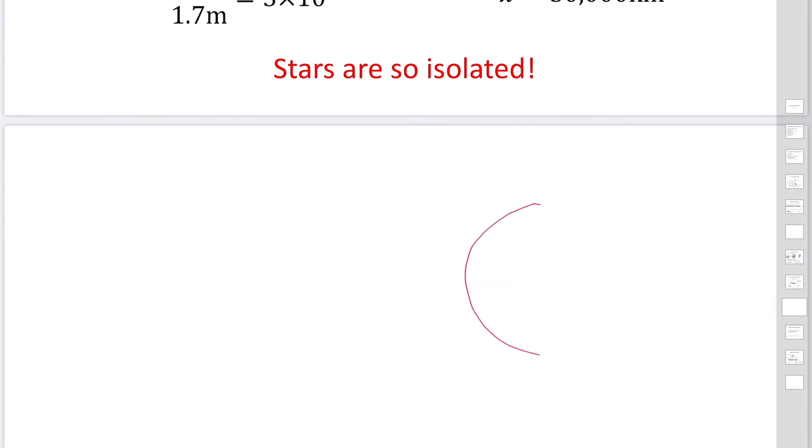If you live here, the longest distance you could consider is 20,000 kilometers, longer than this length. So stars are so isolated. When you consider the evolution of stars, we don't have to consider neighbor stars. Only we consider single stars.